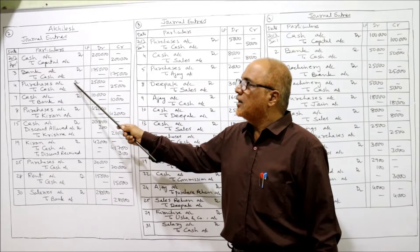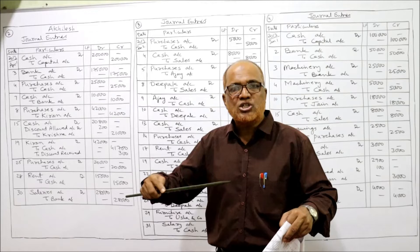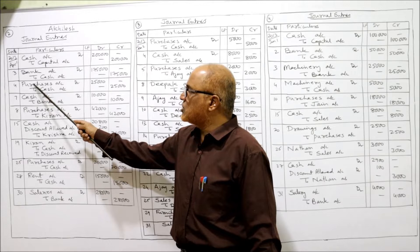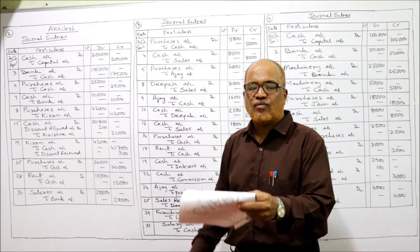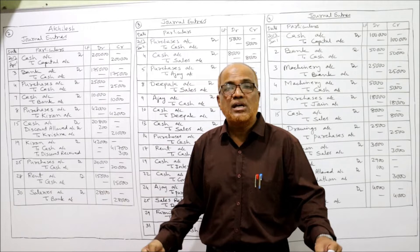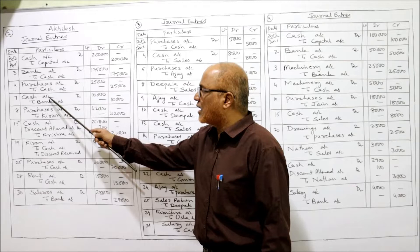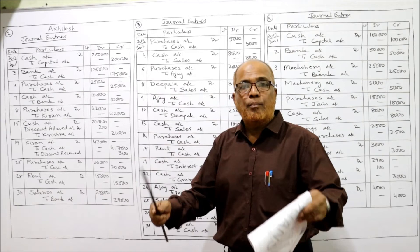Narration: being the cash deposited in bank. Next transaction, 4th: bought goods for cash — purchased goods for cash, goods are coming in, cash is going out. Purchases account debit to cash 25,000. Being the goods purchased for cash. Next, 7th April: drew cash from bank for office use — cash is coming in, so cash should be debited. Cash account debit to bank 10,000, being the cash withdrawn from bank for office use.